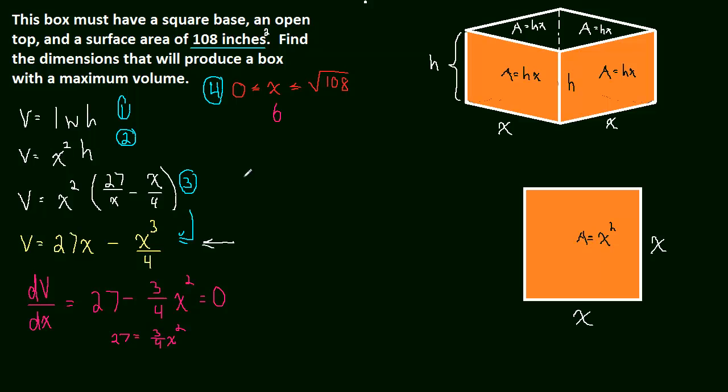We need to plug 0, 6, and the square root of 108 into the original function for volume. If we plug 0 in, we get 0 - 0 = 0. If we plug the square root of 108 in, then we get 27√108 - (√108)³/4, which can be written as 27√108 - (108√108)/4. Well, 108 divided by 4 is 27. So this is 27√108 - 27√108, which equals 0.